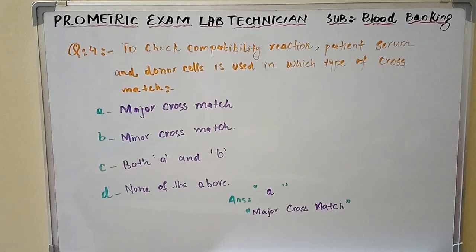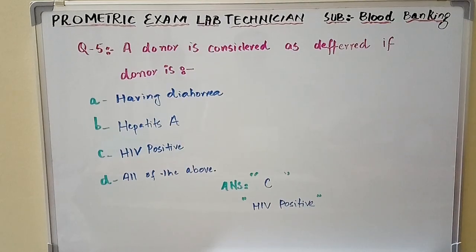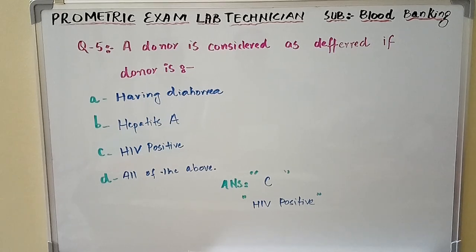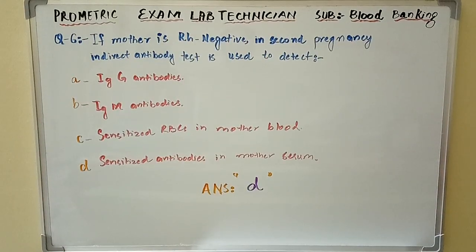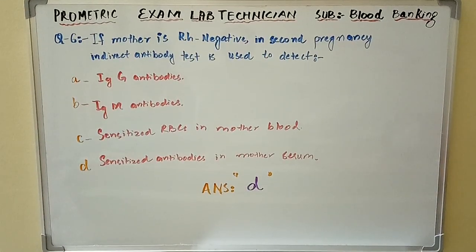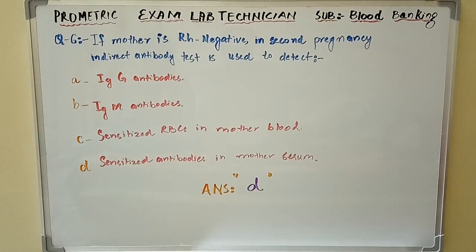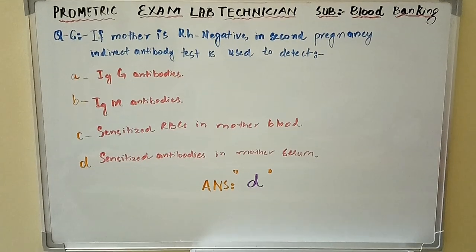Question number five: A donor is considered as deferred if the donor is — the answer is Option C: HIV positive. Question number six: If mother is Rh negative in second pregnancy, indirect antibody test is used to detect — the answer is Option D: sensitized antibodies in mother's serum.